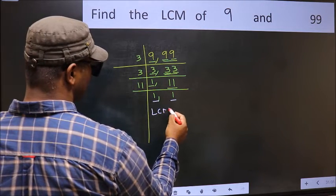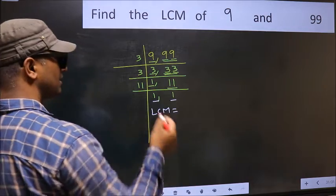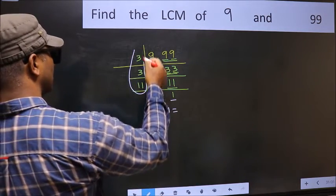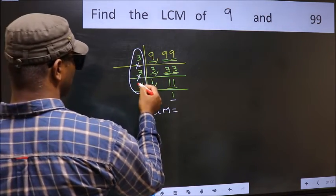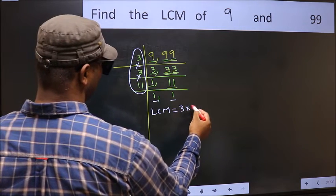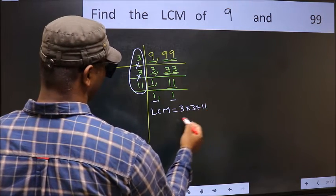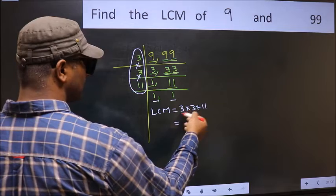So our LCM is the product of these numbers. That is 3×3×11. When we multiply these numbers, we get 99 is our LCM.